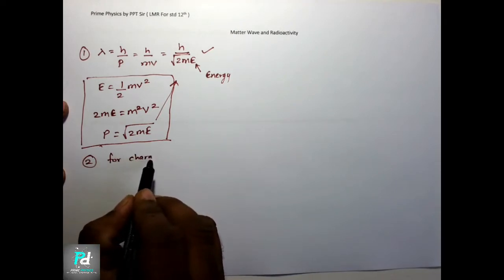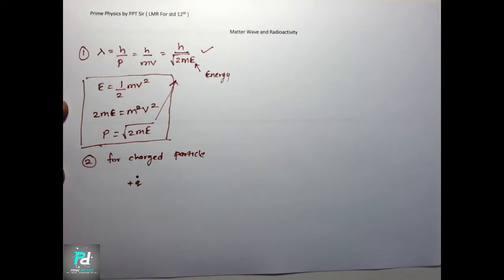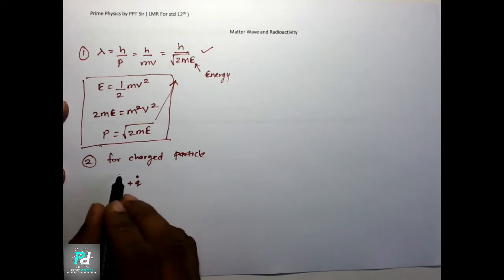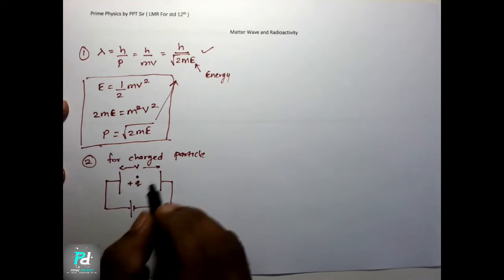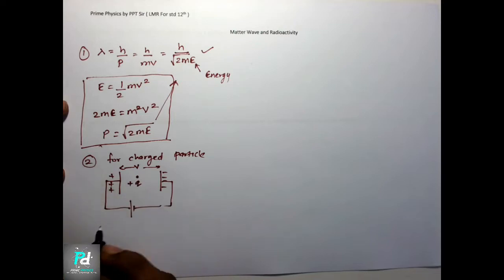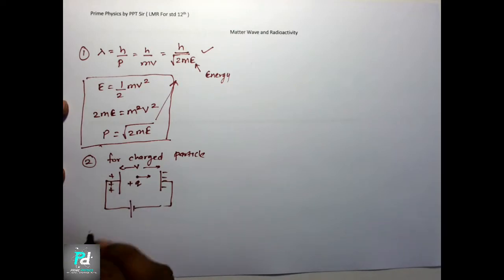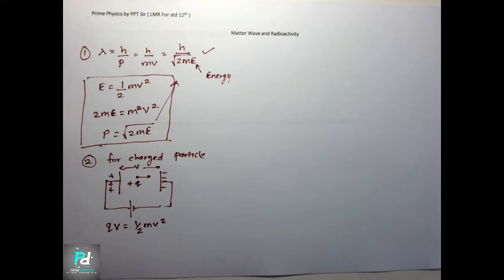Now for a charged particle: suppose there is a charge. To bring this charge into motion — because until the body moves, De Broglie wavelength won't be obtained — the particle must be in motion. So this charged particle is connected to a potential. Two plates are set up: one positive, one minus, connected to plus and minus potential. So the charge starts moving, gaining kinetic energy from the potential. The formula is qV equal to half mv².